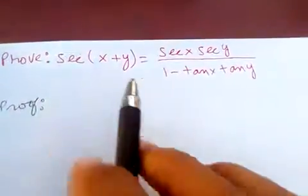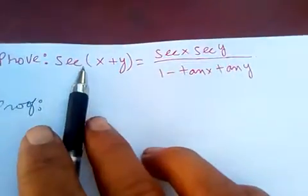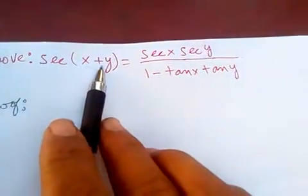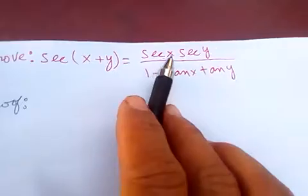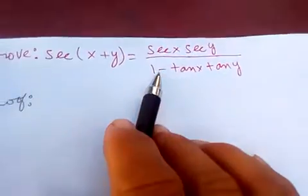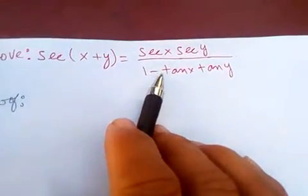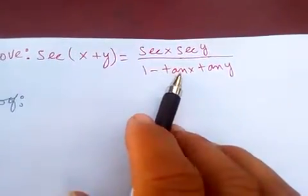Hi friends, today I'm going to prove that secant of (x + y) equals sec(x) times sec(y) over 1 minus tan(x) times tan(y).